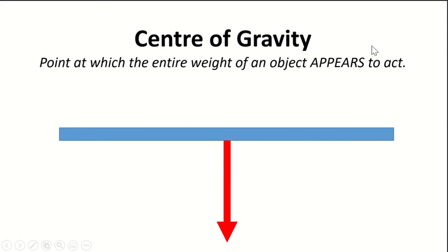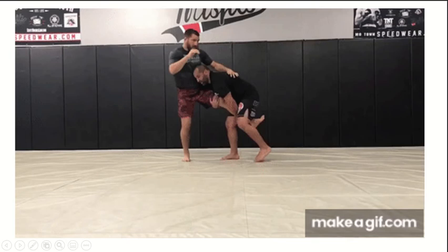So what is the definition of center of gravity? The center of gravity is basically just the point at which the entire weight of an object appears to act.